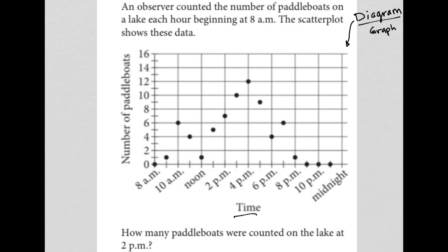We have an x-axis, which is time. We have a y-axis, which is number of paddle boats. And we have a scatter plot here, all these data points along the way.